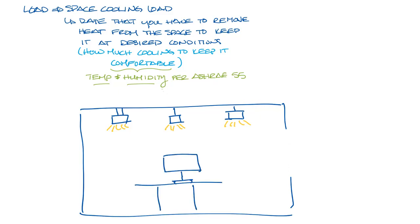If there's a window, you might have solar load coming in through the window. Or if the space next door has a high heat load for some reason, you might have some transmission coming through there. Or you might have heat gain from outside air coming into the space through doors or small cracks in the building called infiltration.